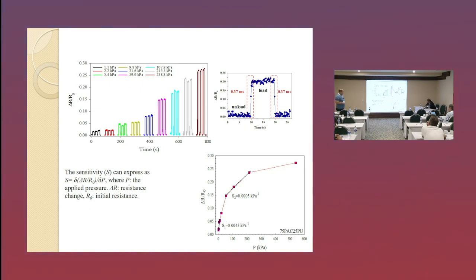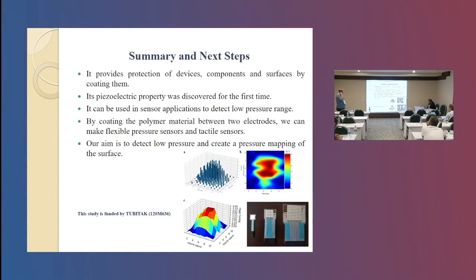This range, the higher sensitivity values, the better pressure sensor. And next step, it provides protection of devices, components, and surfaces by coating them. Piezoelectricity of Parylene was discovered for the first time. It can be used in sensor applications today to detect low pressure range below 10 kilopascal. By coating polymer material between two electrodes, we can make flexible pressure sensors and tactile sensors. Tactile sensor is a type of pressure sensor, and that pressure sensor is located in a matrix form.